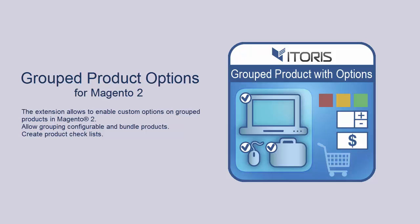By default, Magento allows you to add only simple products without any custom options to a group product. The extension offers to group simple and virtual products with options, configurable and bundle products. Also, customers will be provided with the options on the frontend to configure them before adding to cart.